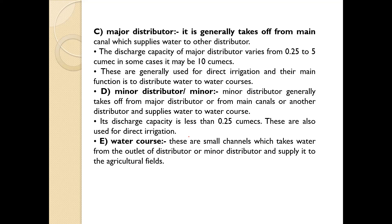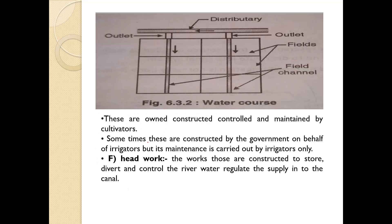Water courses are small channels which take water from the outlet of the distributor or minor distributor and supply it to the agriculture field — in local language called a 'pot'. These are owned, constructed, controlled, and maintained by the cultivators, i.e., farmers. Sometimes these are constructed by the government on behalf of irrigators, but maintenance is carried out by irrigators only. Head work: the works constructed to store, divert, and control the river water and regulate the supply to the canal are called head work.